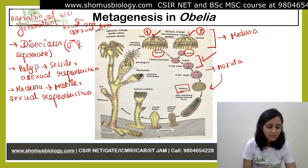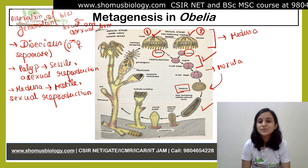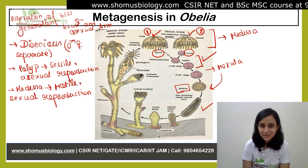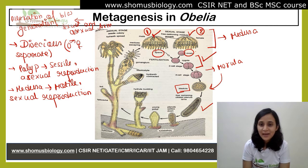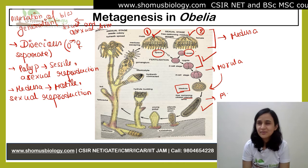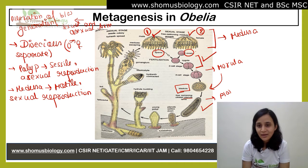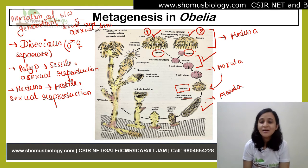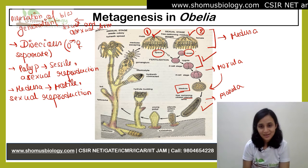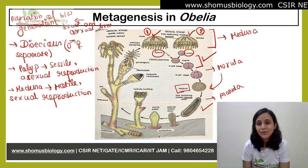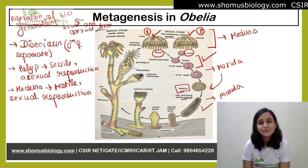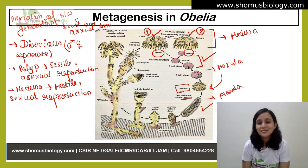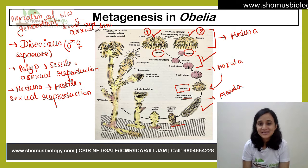From the blastula, a larva is formed, and that larva is called the planula. The planula is the larval stage in their life cycle. The planula will swim, and then after swimming it will find a suitable place to settle down.